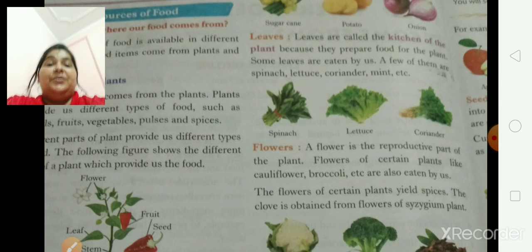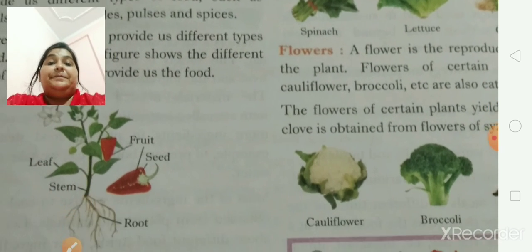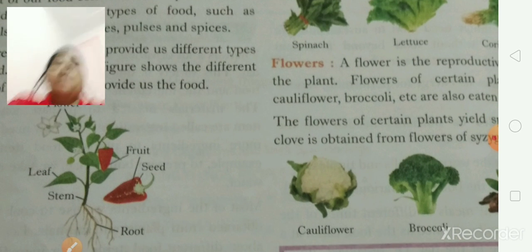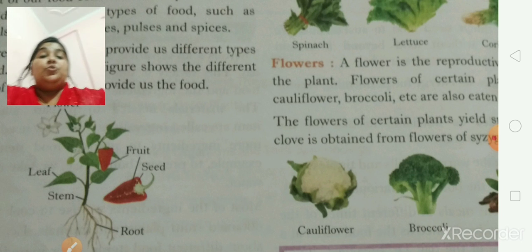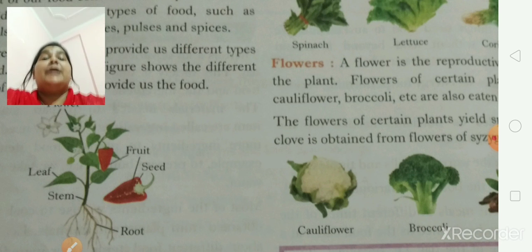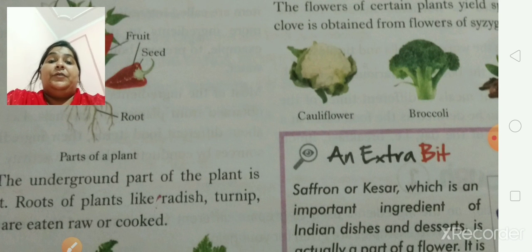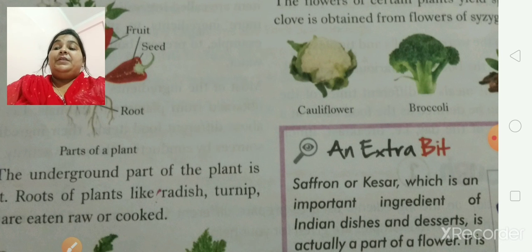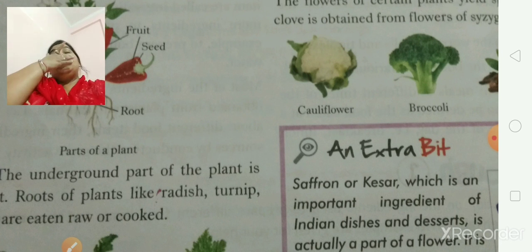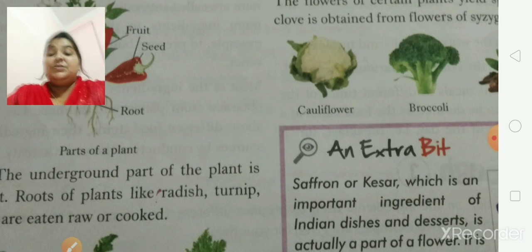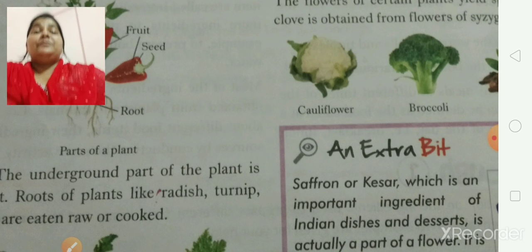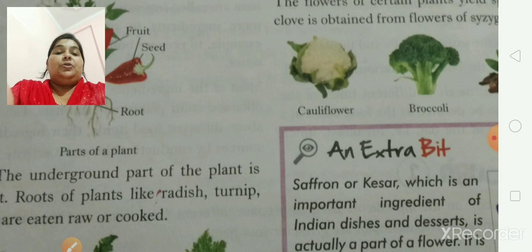From this figure you can see thoroughly that the parts of plants are given here: leaf, stem, flower, fruit, seed, and roots. These all are important and we can have them as our food. One by one we are going to read about this. The best examples of roots are radish, turnip and carrot. In winters you usually have carrot eaten raw or cooked.